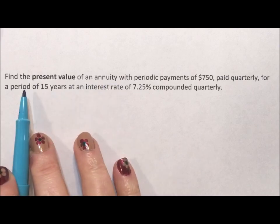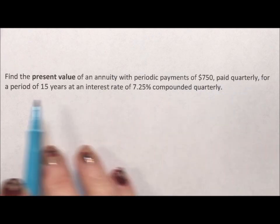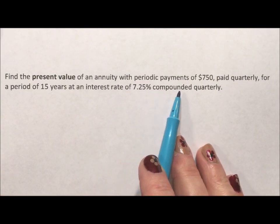So it says, find the present value of an annuity with periodic payments of $750 paid quarterly for 15 years. Interest rate 7.25% compounded quarterly.